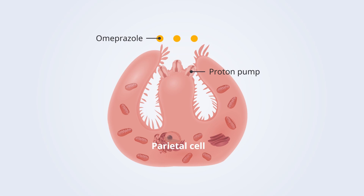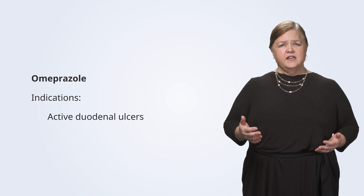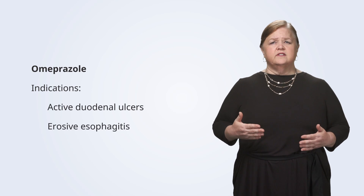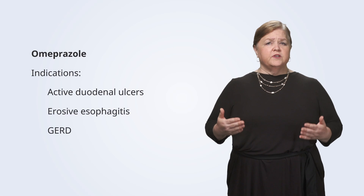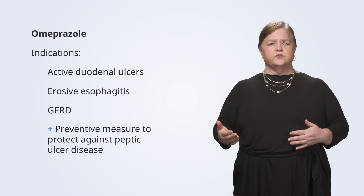Omeprazole is a proton pump inhibitor that irreversibly blocks the hydrogen potassium ATPase enzyme system, also known as the proton pump. This mechanism of action reduces gastric acid secretion, providing relief from symptoms and promoting healing. Omeprazole is used to treat conditions like active duodenal ulcers, erosive esophagitis, and gastroesophageal reflux disease, and it can also be used as a preventative measure against peptic ulcer disease.